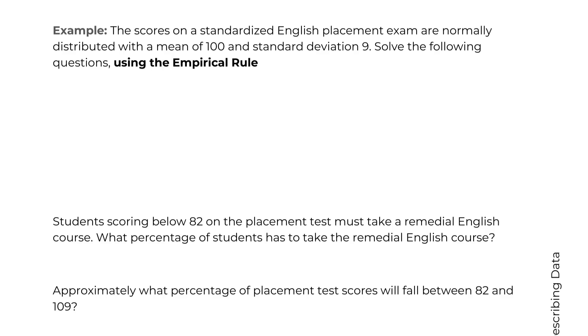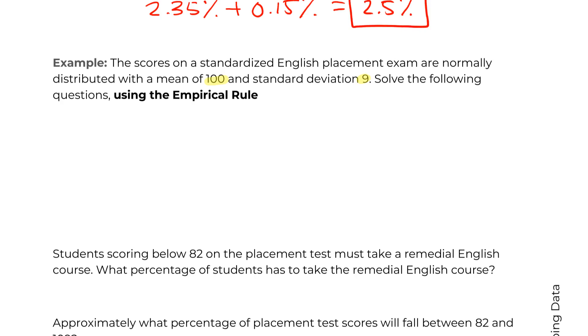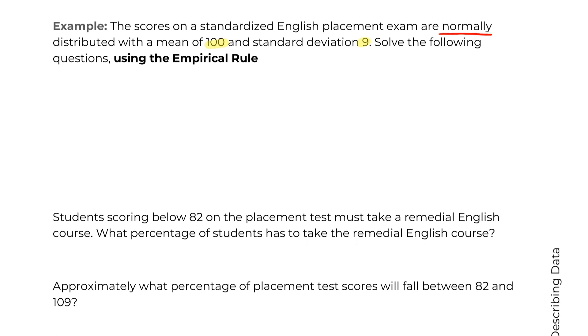So our second empirical rule example, now we're dealing with English placement exams, but we're still given a mean and a standard deviation. Because remember, the whole point of this section is that the mean and standard deviation can tell us a lot about the distribution without even seeing a picture. We also have a really important keyword we're going to be seeing throughout this course. We're told these exam scores are normally distributed. So that means we can use the empirical rule, and we know the 68, 95, 99.7 holds.